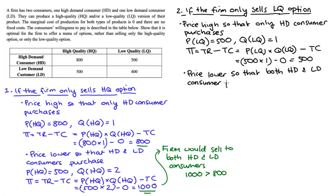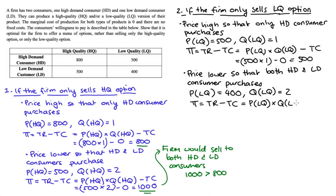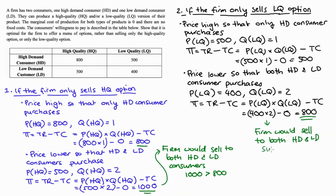Alternatively, they could sell to both consumers by dropping the price to $400 — the highest willingness to pay for the low quality option from the low demand consumer. Both types would be willing to buy, so quantity equals two. Profit = 400 × 2 − 0 = $800. So if the firm only offered the low quality bundle, they'd sell to both consumers because $800 is greater than $500.